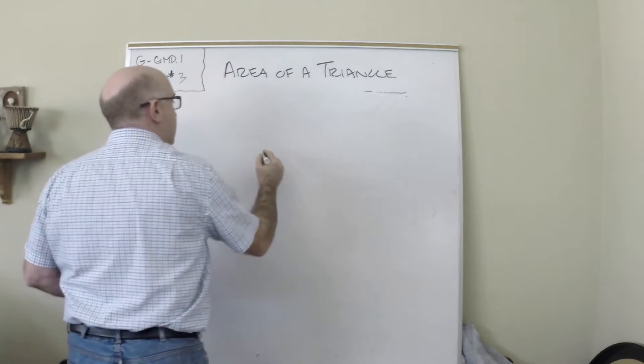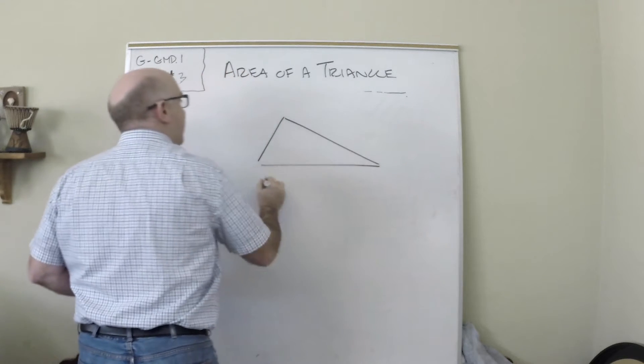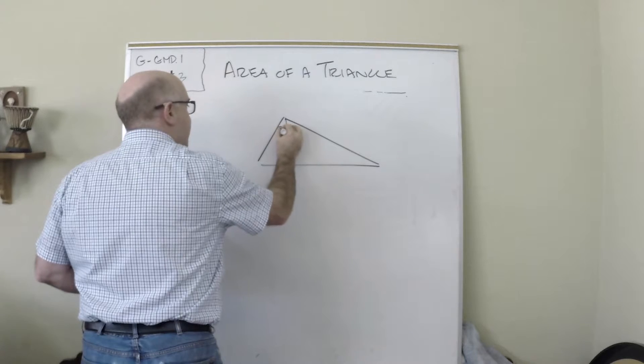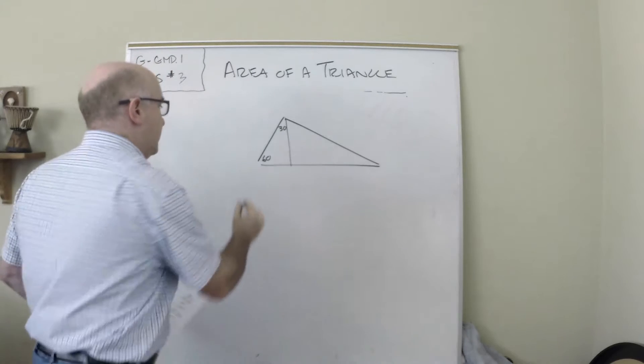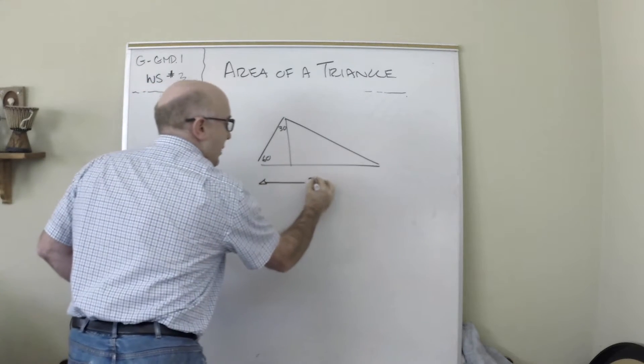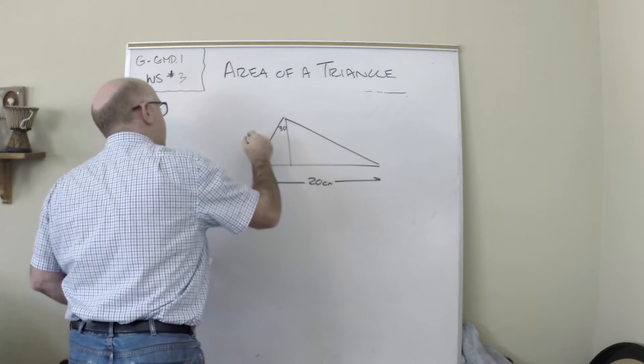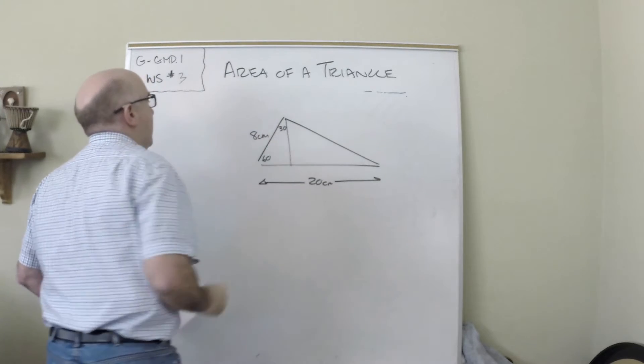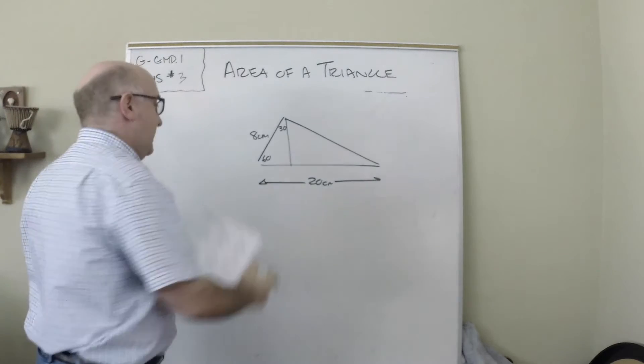Let's do one with a 30-60-90. So let's say we had this kind of a triangle, and this is 30, 60, and 90, and they tell us that this is 20 centimeters, and they tell us that this is 8 centimeters. And we say, 'Well, how do we find the area of this?'